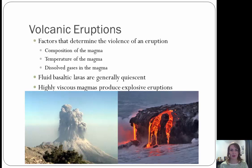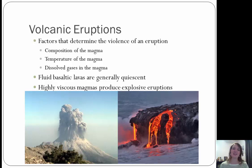We're going to talk about what compositions are. What are some of the compositions that we learned in igneous rocks? Starting at one end of the spectrum, we had felsic, intermediate, mafic, and ultramafic. Some factors that determine the violence of a volcanic eruption are the composition, the temperature, and the dissolved gases in the magma.